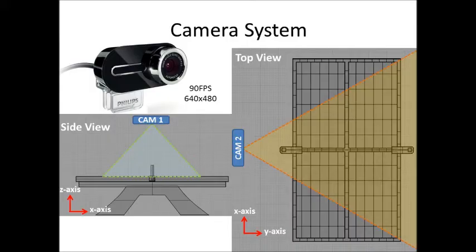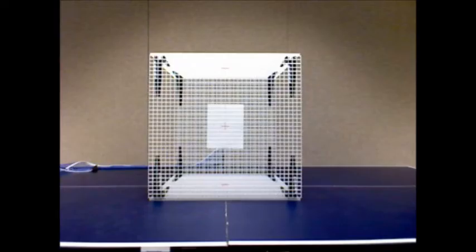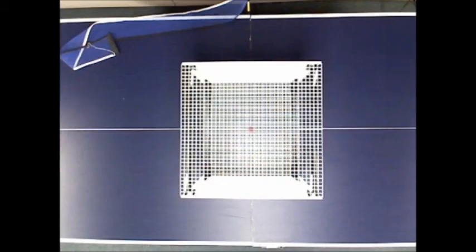We took two webcams and placed one above the ping pong table and the other on the side to track the ping pong ball in three dimensions. The webcams' optical axes were found, enabling our code to track the ping pong ball accurately and improving our tracking timing.